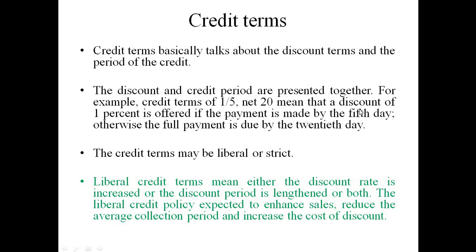This means that a discount of 1% is offered if the payment is made by the 5th day; otherwise, the full payment is due by the 20th day. Similarly, if written as 3/10 net 30, the credit period is 30 days, but if you pay within 10 days, you get a 3% discount. This is the credit terms notation.